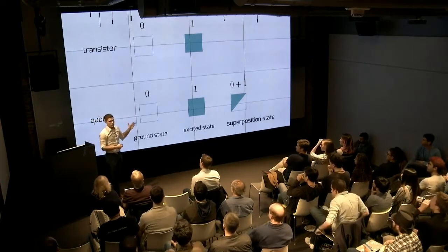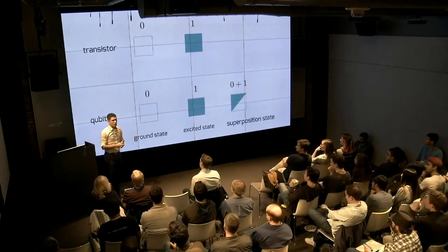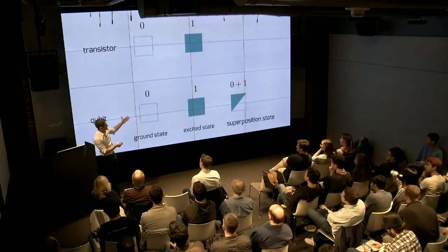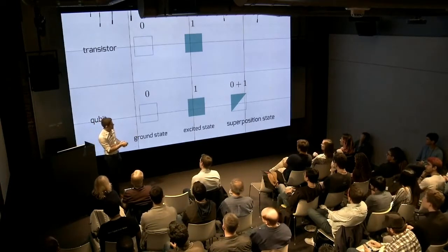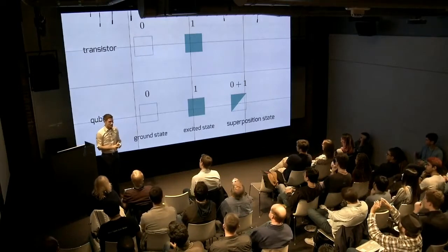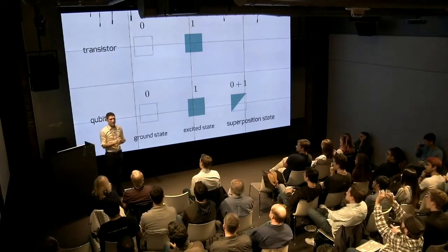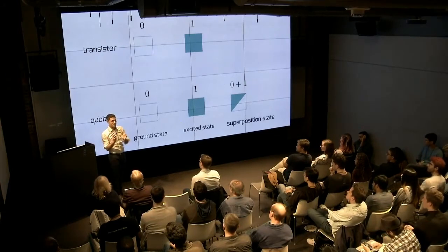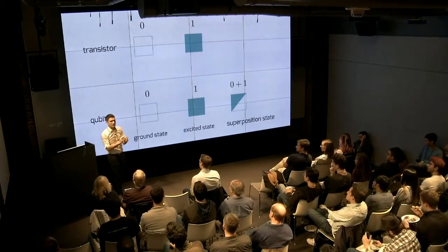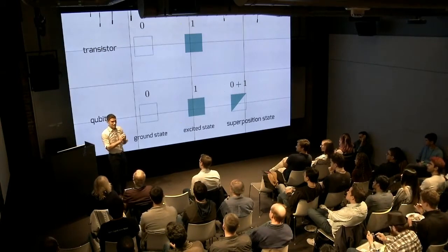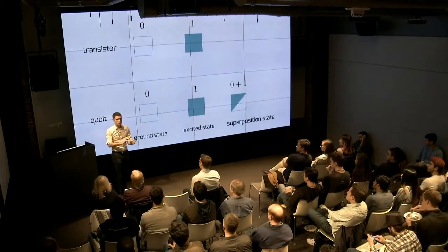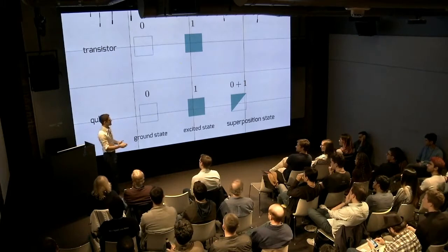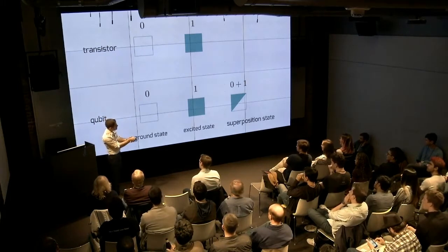In the superconducting qubit community, we call the empty state the ground state, the full state the excited state, and we call the combined state the superposition state. Something I want to be clear about is that quantum computing is not about taking transistors and making them smaller. The idea is to replace transistors with new components called qubits, and the main difference is that these qubits can be in a superposition state.